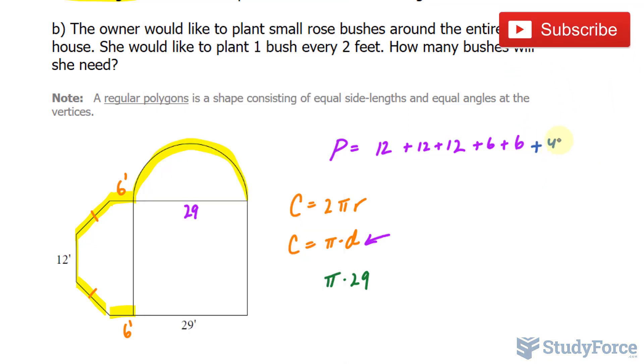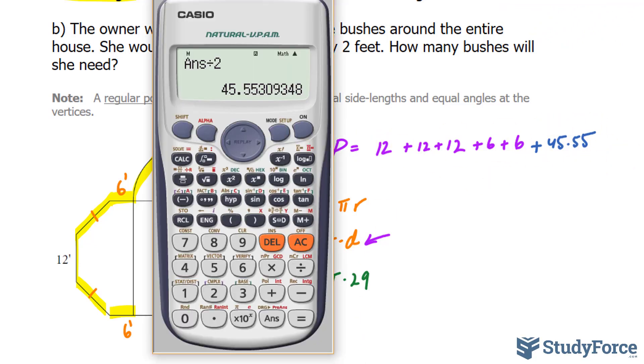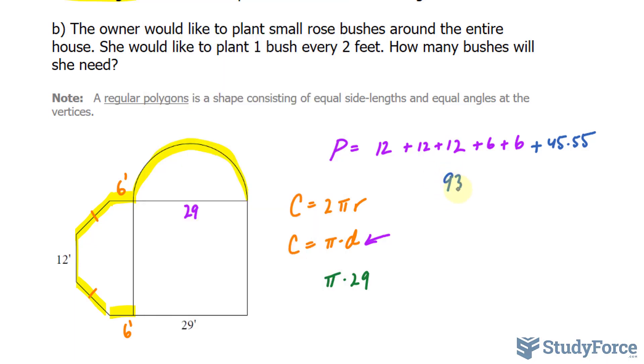So I'll add 45.55 to this growing equation. Now I can add plus 12, that number, plus 12, plus 12, plus 6, plus 6, and we end up with 93.55 is the perimeter. 93.55, and we should write down feet.